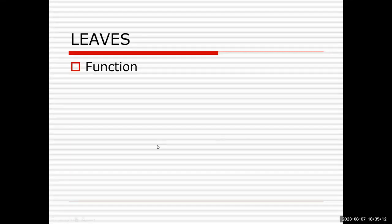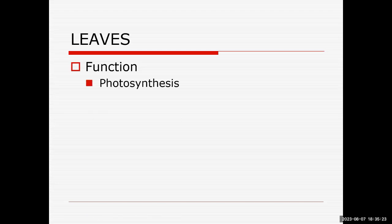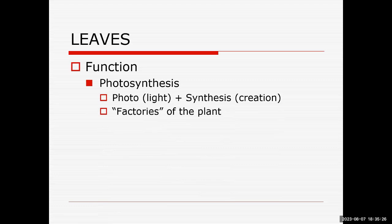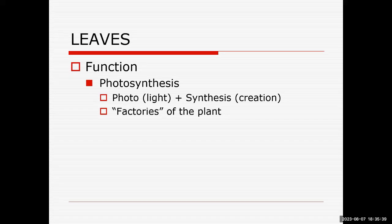Let's look at leaves. The number one function of leaves for plants is that leaves are their factories. Photosynthesis — photo means light, synthesis means creation — so photosynthesis literally means making something in the presence of light. What we're making are carbohydrates or sugars. That's why leaves are often called the factories of the plant.